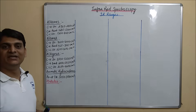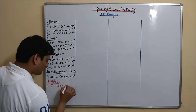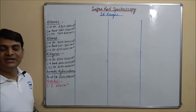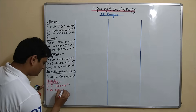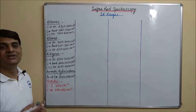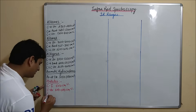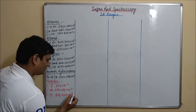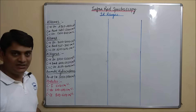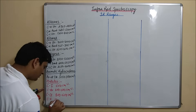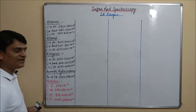Now coming to the Halides. Iodine is 500 cm inverse. Bromine is 600 to 500 cm inverse. Chlorine is 800 to 600 cm inverse. And Fluorine is 1400 to 1000 cm inverse. So these are the various IR ranges for Halides.